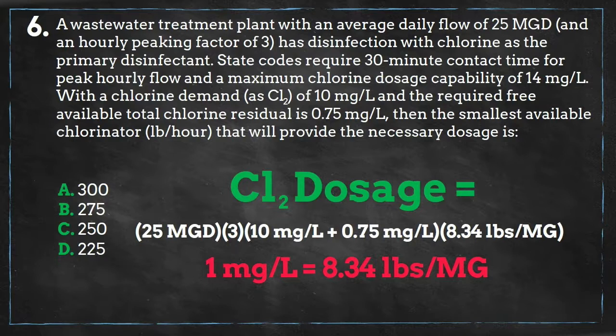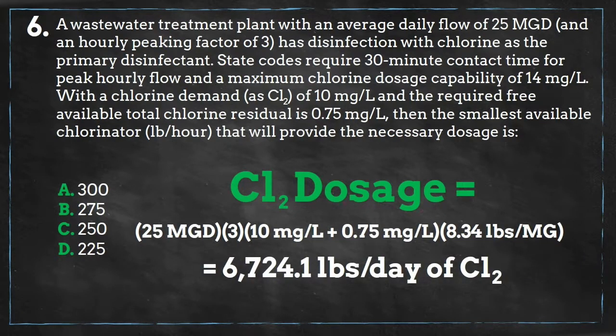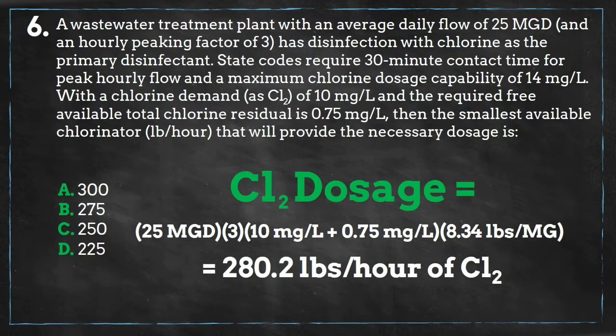We'll use the unit conversion of 1 milligram per liter equals 8.34 pounds per million gallons, and we get an answer of 6,724 pounds per day of chlorine. Converting that into an hourly rate, we get 280.2 pounds per hour of chlorine.